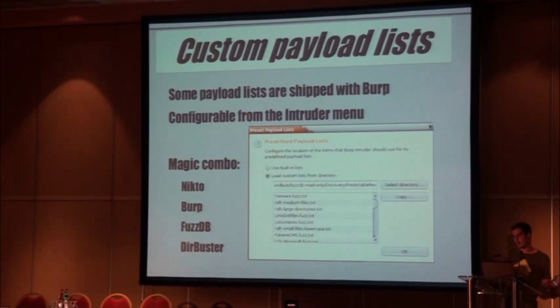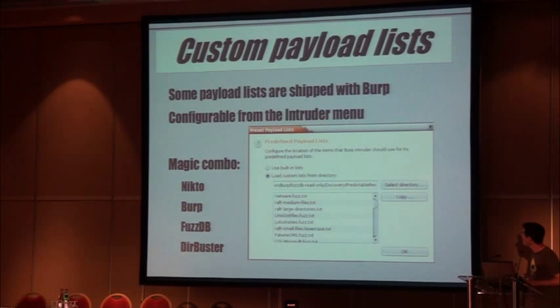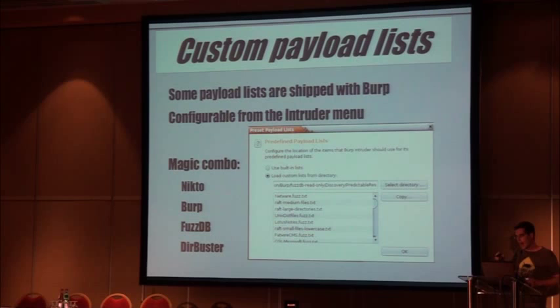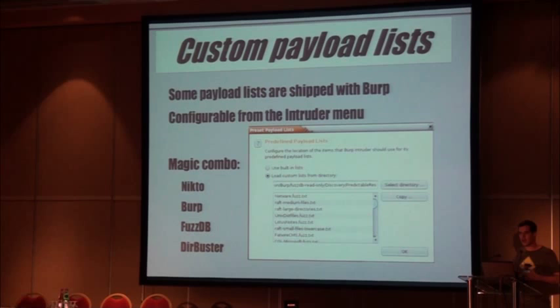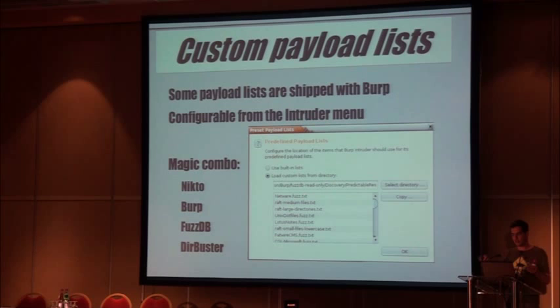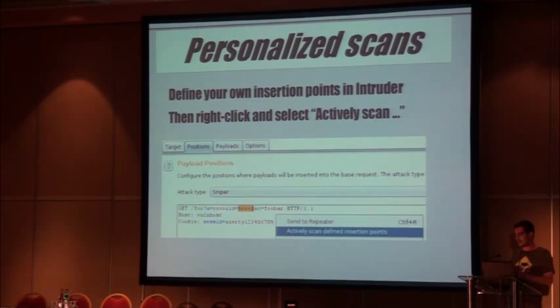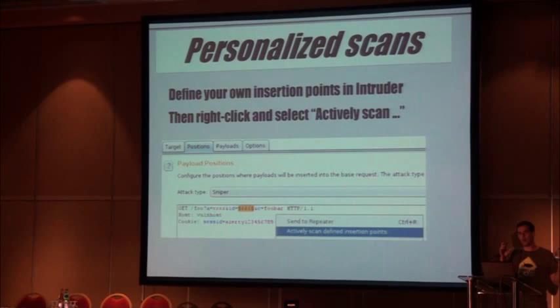Custom payloads. By default you have some payloads shipped with Burp Pro — default user agents, usernames, passwords, etc. But sometimes you want other lists. You can load from an external file, but that's three or four mouse clicks, which is too much. Instead, configure your intruder menu with directories where you put your word lists and include them all. Then you can access your word lists with only one click. The magic combo is something like the Burp default list, then Nikto, FuzzDB, DirBuster, RockYou password list — whatever you need. You win three clicks.